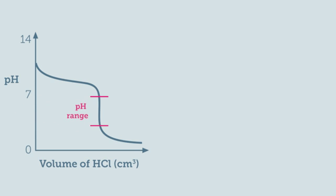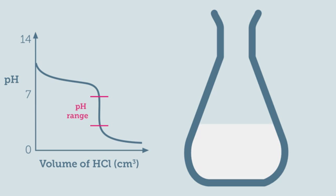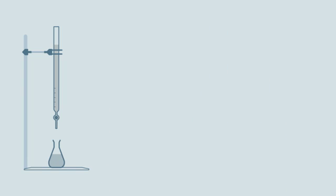This sharp decrease in pH indicates that you have reached the end point of the titration, which we can visualize using a suitable indicator compound that changes color within the required pH range.